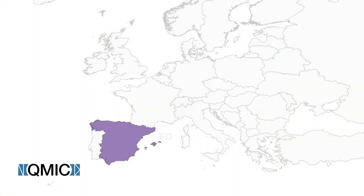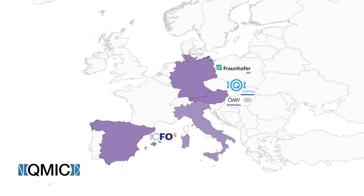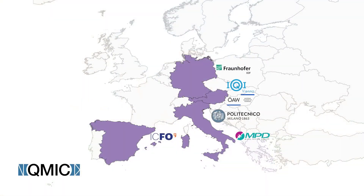Within QMIC there are a lot of partners. There are people working in the development of the new source, which is the Vanhoeffer Institute and the Institute of Quantum Optics in Vienna. We also have people working on the new cameras that will be needed for the project, which is MPD and PolyME in Italy. And finally, we also have people working in another generation of imaging based on Hong-Ou-Mandel effects, which is the University of Glasgow.